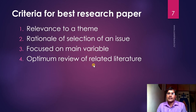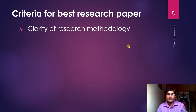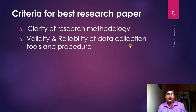Fourth, optimum review of related literature — include articles, research papers, dissertations, theses, online and offline resources. Fifth, clarity of research methodology — clearly mention the objective, sampling, research method or type, and research tools and how they were developed. Sixth, validity and reliability of the data collection tools — mention the methods adopted for validation and reliability testing, and the procedures followed: how you selected the sample and collected the data.